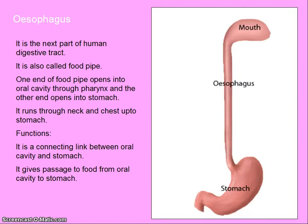Esophagus is the next part of human digestive tract, also called food pipe. One end of the food pipe opens into oral cavity and the other opens into stomach. It runs through neck and chest up to stomach. It is a connecting link between oral cavity and stomach, and it gives passage to food from oral cavity to stomach.